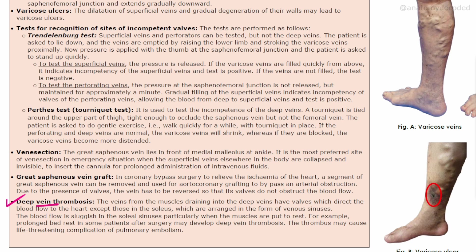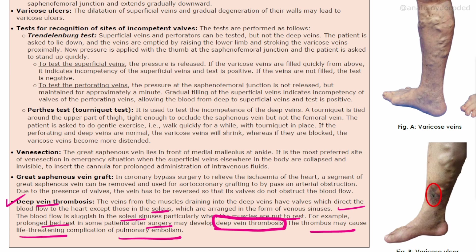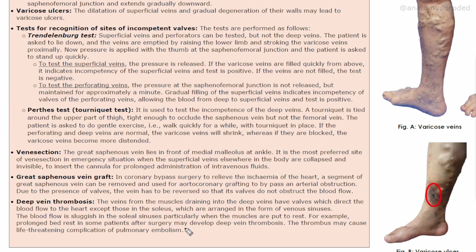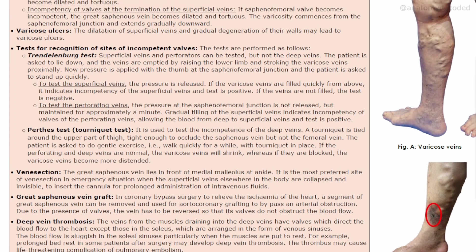Deep vein thrombosis: the veins from muscles draining into the deep veins have valves directing blood flow to the heart, except those in the soleus, which are arranged as venous sinuses. Blood flow is sluggish in the soleal sinuses when muscles are at rest, such as during prolonged bed rest after surgery. These patients may develop deep vein thrombosis. The thrombus may cause life-threatening complications like pulmonary thromboembolism, where the thrombus lodges in the lungs.